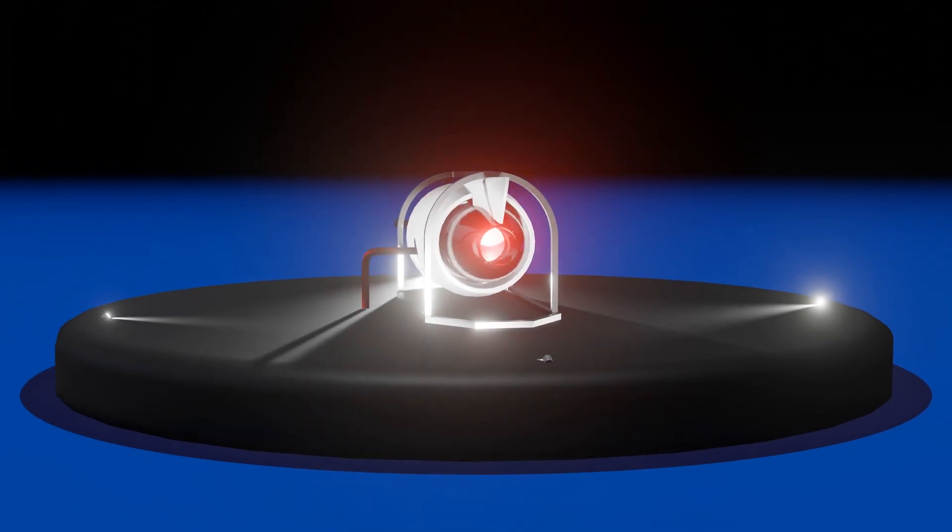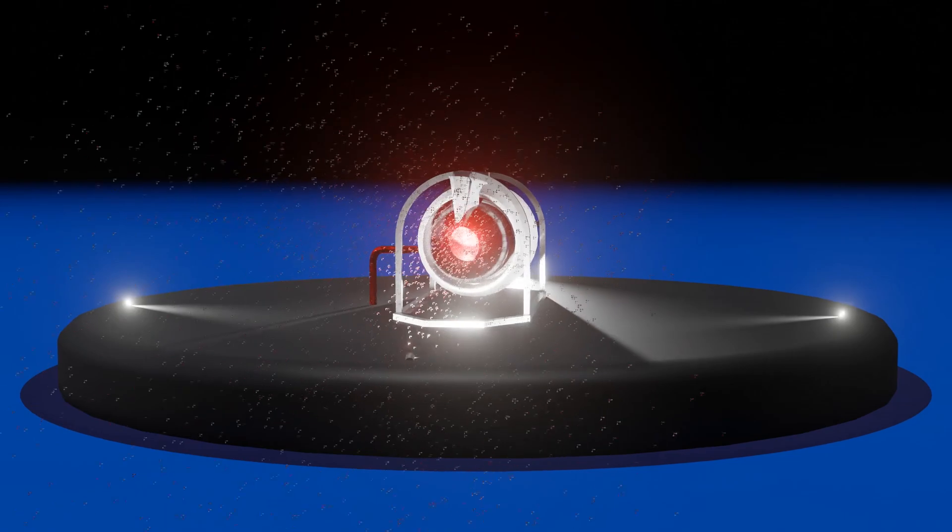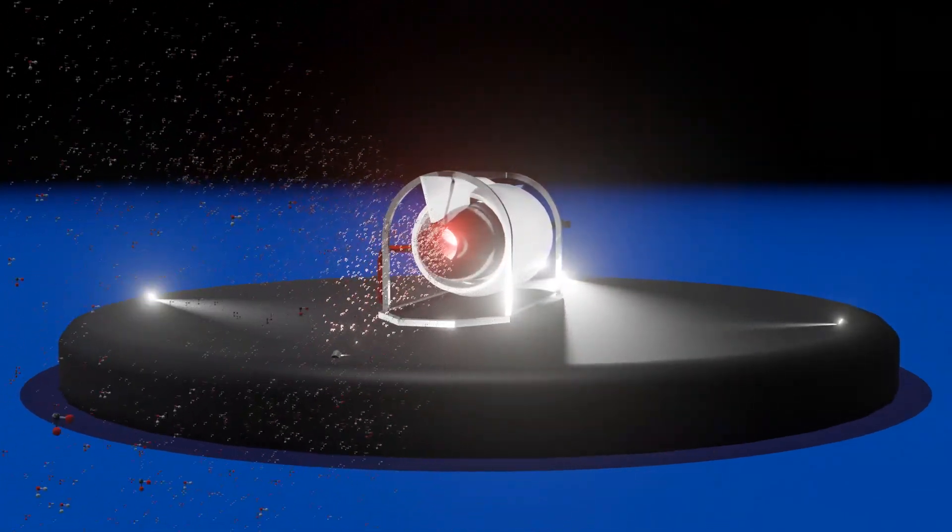The exhaust from the engine is a combination of invisible gases, mostly made up of molecules of carbon dioxide and dihydrogen monoxide, which is of course, water.